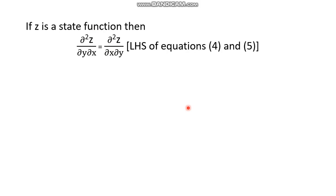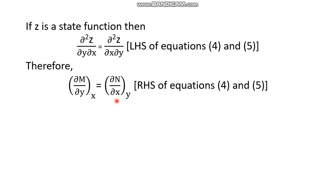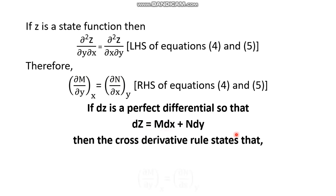Since dz is a perfect differential because z is a state function, the left-hand sides of equations 4 and 5 must be equal, which means the right-hand sides are also equal. So the cross derivative rule states that if dz is a perfect or exact differential, so that dz equals M dx plus N dy, then del M by del y at constant x equals del N by del x at constant y. This is all about the cross derivative rule.